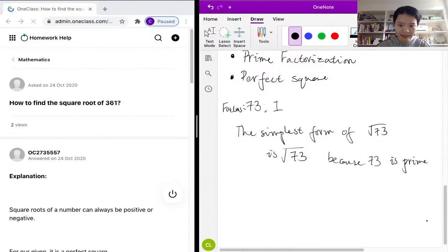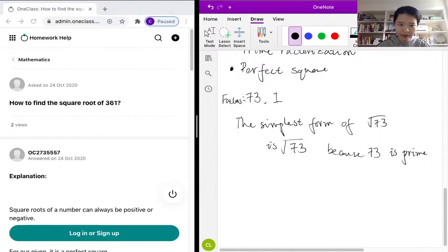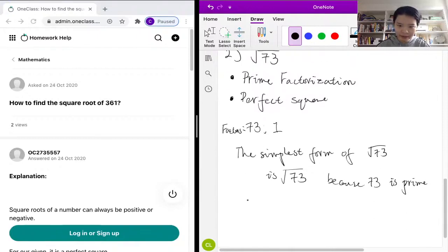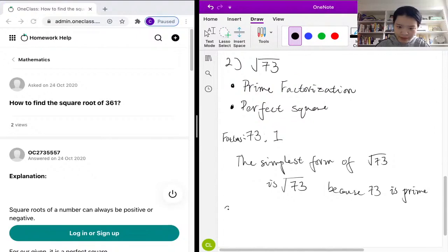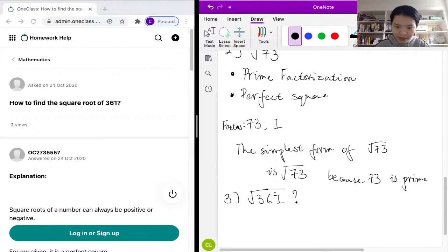The next question is asking us to find the square root of 361. So our question three here is asking us the square root of 361. So again we use the method of prime factorization and we first check whether this is a perfect square.